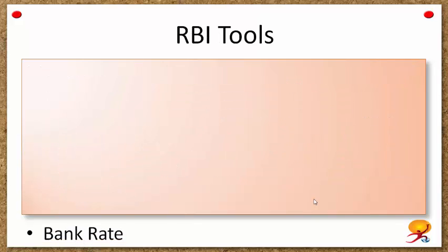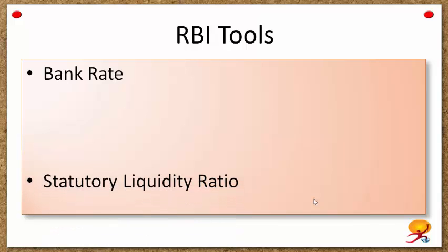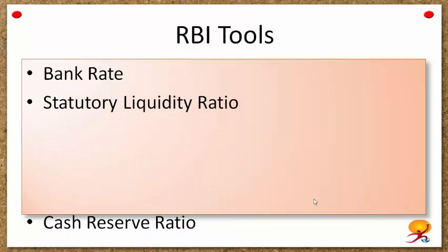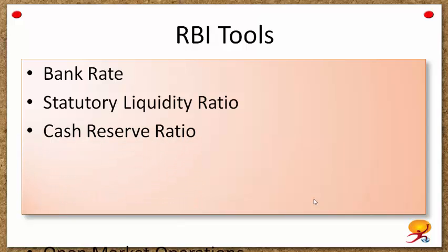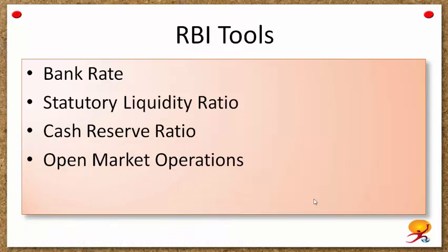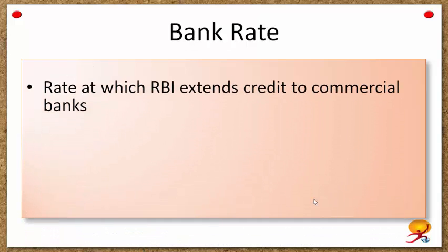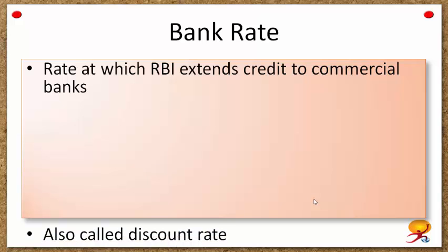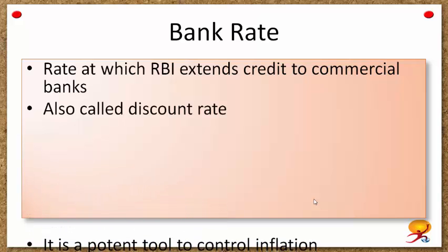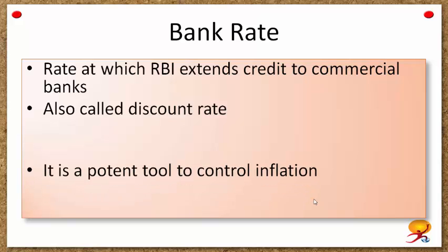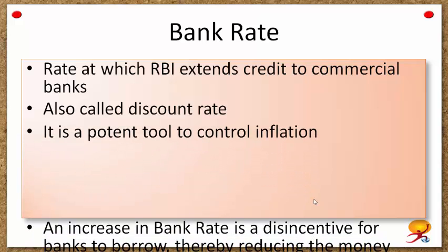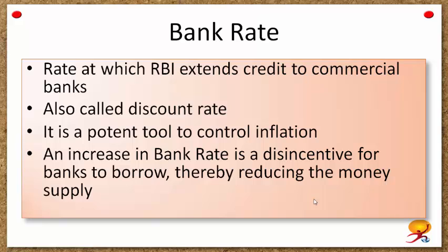RBI has various tools at its disposal to manage monetary policy. The first is the bank rate, statutory liquidity ratio, cash reserve ratio, and open market operations. The bank rate is the rate at which RBI extends credit to commercial banks, also called the discount rate. It is a potent tool for controlling inflation, and an increase in bank rate is a disincentive for banks to borrow, thereby reducing the money supply in the economy.